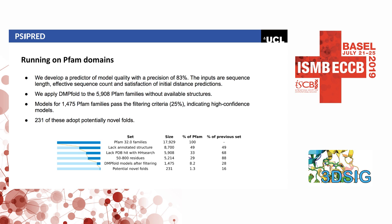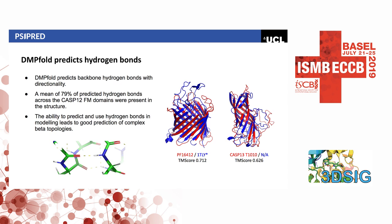Q: Regarding your ability to predict hydrogen bonds, can you comment on how well you're doing with beta sheets versus alpha helices? A: We didn't look at that specifically, but that's something we should look at. We generally find that we can get secondary structures right, partly because we use secondary structure predictions as input to the method. We haven't done a detailed analysis comparing beta sheets versus alpha helices — that would be interesting.